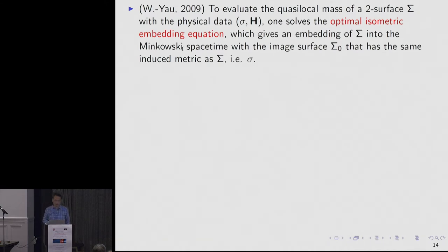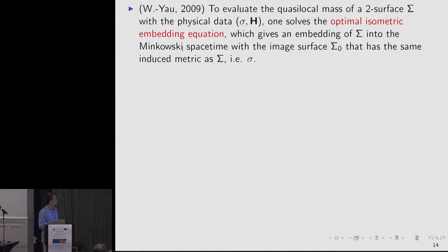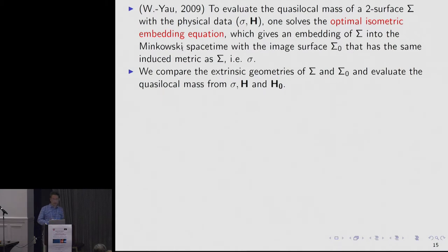Wang and I came up with this definition of a quasi-local mass. We start with this data — a surface with a Riemannian metric and a mean curvature vector field containing all the information of the null expansion. The prescription is that we solve an equation called the optimal isometric embedding equation. This equation produces a different surface in the Minkowski spacetime — a flat spacetime with no matter and no gravitation. This new surface actually has the same induced metric as the original physical surface, and we use this to anchor the intrinsic geometries and compare them to read off the mass.